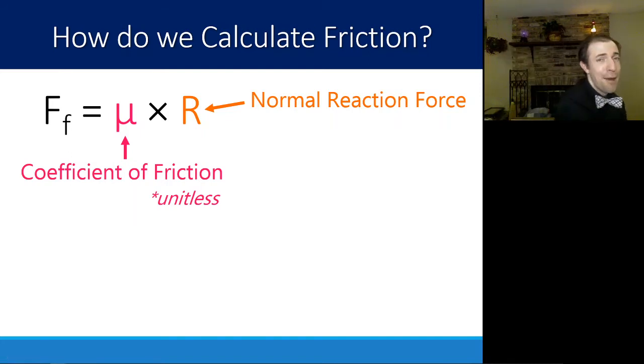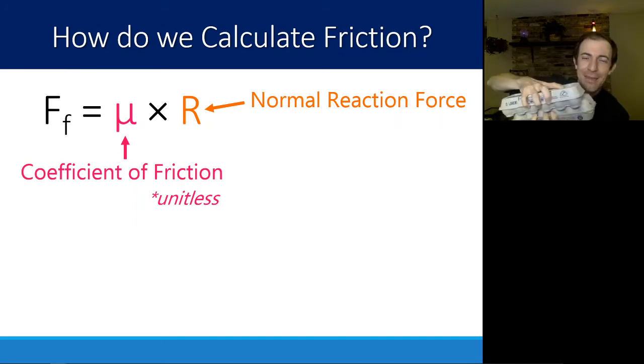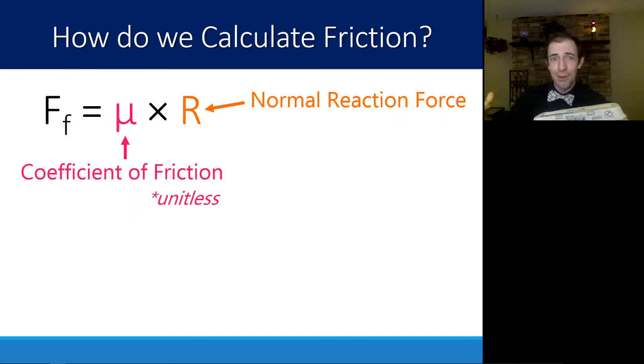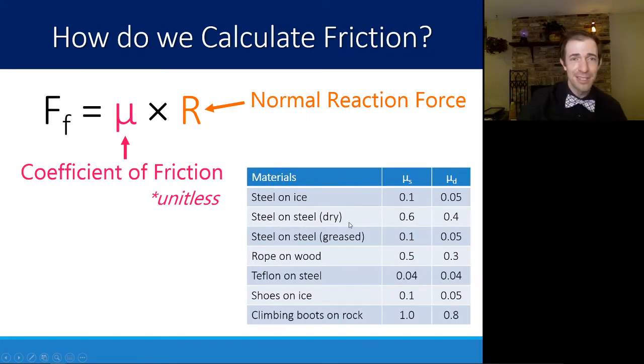Think of R as how much you are squeezing those surfaces together. The harder you squeeze them together, the harder it is going to be to pull them across from each other. Coefficient of friction changes depending on the materials you're talking about. Steel on ice has a pretty low coefficient of friction, but climbing boots on rock have a pretty high coefficient of friction.